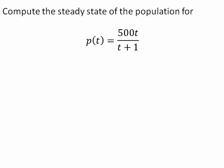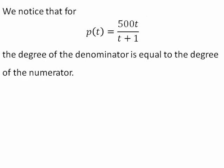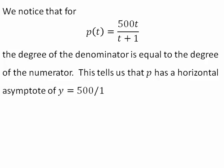Let's find the steady state of the population. To compute the steady state of the population, we're just finding the limit of p as t goes to infinity. We notice that for p, the degree of the denominator is equal to the degree of the numerator. And so this tells us that p has a horizontal asymptote of y equals 500 over 1. 500 is the coefficient of the linear term in the numerator, and 1 is the coefficient of the linear term in the denominator.